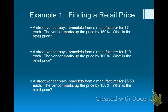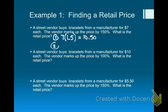It's a two-step process. Step one: take the original price and multiply it by the percentage. When you multiply a percent by a number, you have to change it to a decimal. So seven times 1.5 gives me $10.50. But that's not the retail price — that's the profit, that's the markup. In step two, take the original price and add it to the markup amount, and that gives you the retail price.